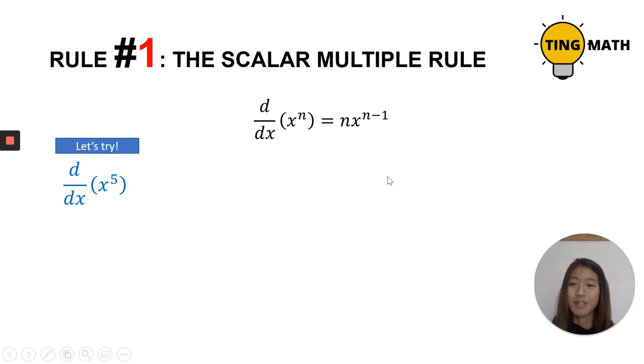So rule number one is the scalar multiple rule, the basic of differentiation. When we want to differentiate x to the power of n, it will equal n multiplied by x to the power of n minus one. What this simply means is that we just need to bring the power down, power of x down, and then minus one on its power.